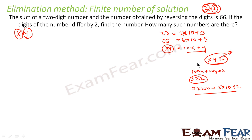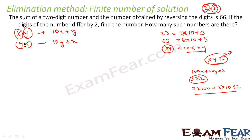The number obtained by reversing the digits is yx, which has numerical value 10y plus x, since y is now in the tens place and x is in the units place. So the original number is 10x plus y, and the reversed number is 10y plus x. The question says their sum is 66, so: (10x plus y) plus (10y plus x) equals 66.